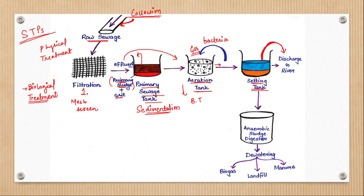The settled sludge part is taken to the anaerobic sludge digester. In the anaerobic sludge digester, we take it through dewatering and use biogas plants, landfills, and manure. The treated effluent from the anaerobic sludge digester is then discharged to the river.